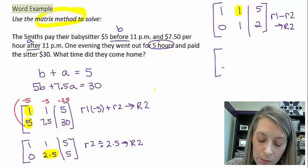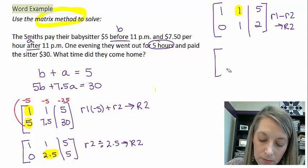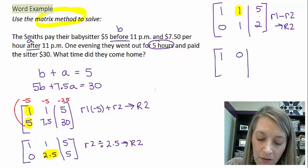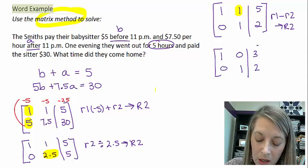So 1 minus 0 gives me 0. 1 minus 0 gives me 1. 1 minus 1 gives me 0. And 5 minus 2 gives me 3. And just copying down my second equation.